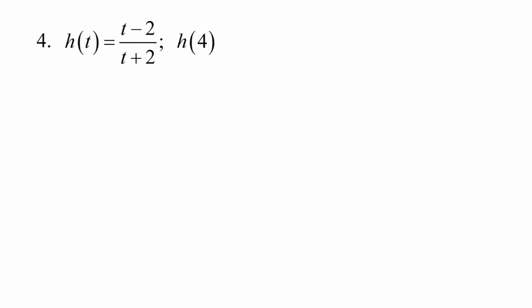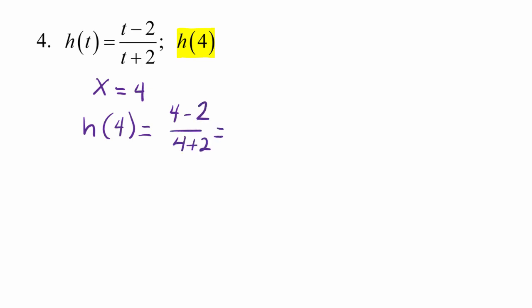Problem number 4: this kind of function, named h, is called a rational function. We are asked to find h of 4, which means x equals 4. So h of 4 is equal to 4 minus 2 over 4 plus 2, which gives us 2 over 6. Reducing that to lowest terms gives us 1 third. h of 4 is 1 third. We'll be using function notation quite a bit in this course, so it's important that you practice and get used to this notation.